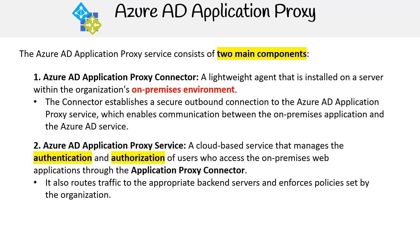Component two is the Azure AD Application Proxy service, a cloud-based service that manages the authentication and authorization of users who access the on-premises web applications through the Application Proxy connector. It also routes traffic to the appropriate backend servers and enforces policies set by the organization.